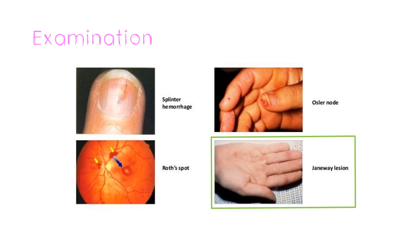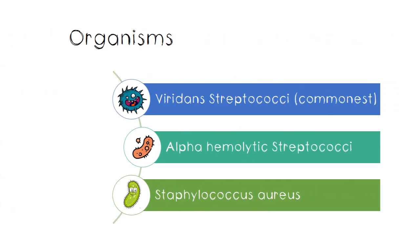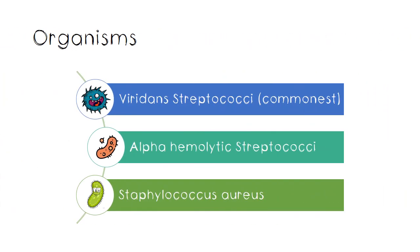Janeway lesions usually occur in the palms and soles and are non-painful. The causative organism for infective endocarditis depends on whether it is acute or subacute and the mode of infection, but the most common organisms are viridans streptococci, alpha-hemolytic streptococci, and Staphylococcus aureus.